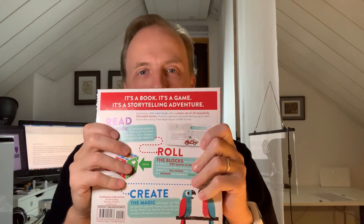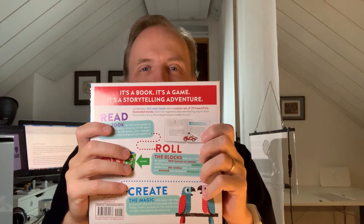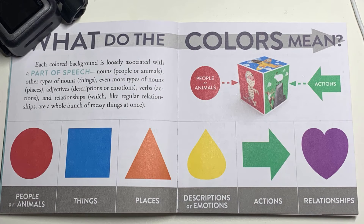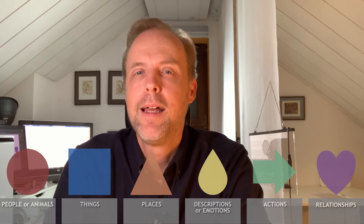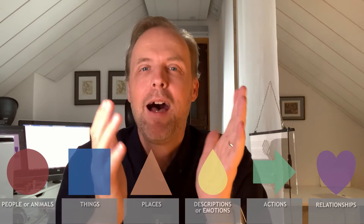I have here a small helper which is called Storyblocks. It's a tool to create interesting story situations from which you can start, and we are going to do exactly that. I took this photo from the instruction manual. These Storyblocks have different colored sides, and every color has a different meaning.